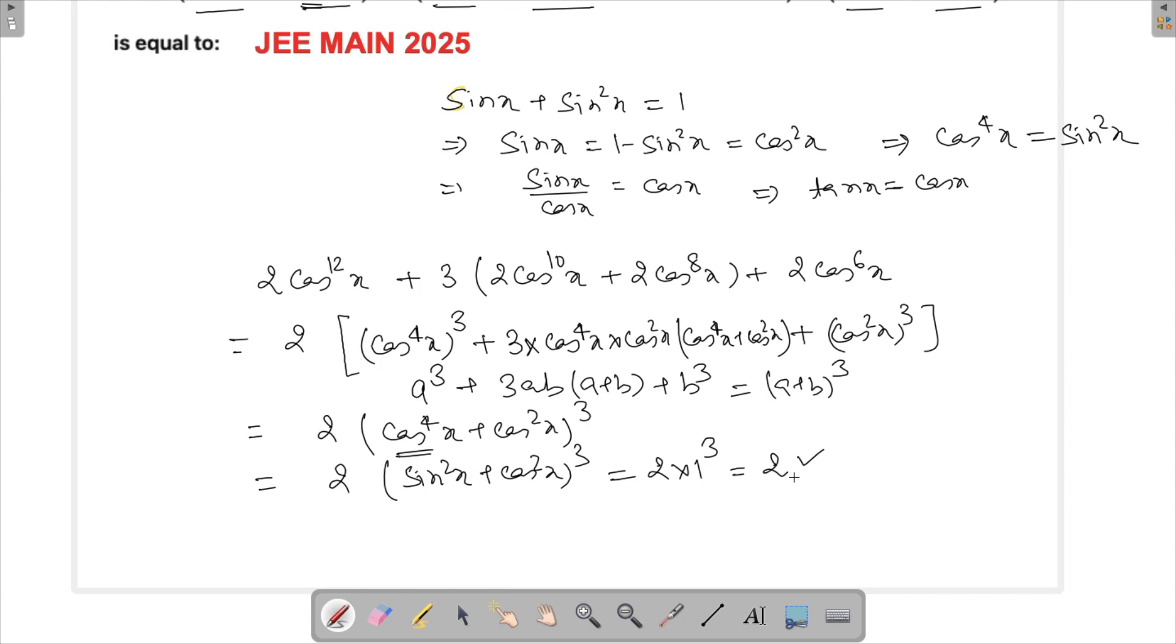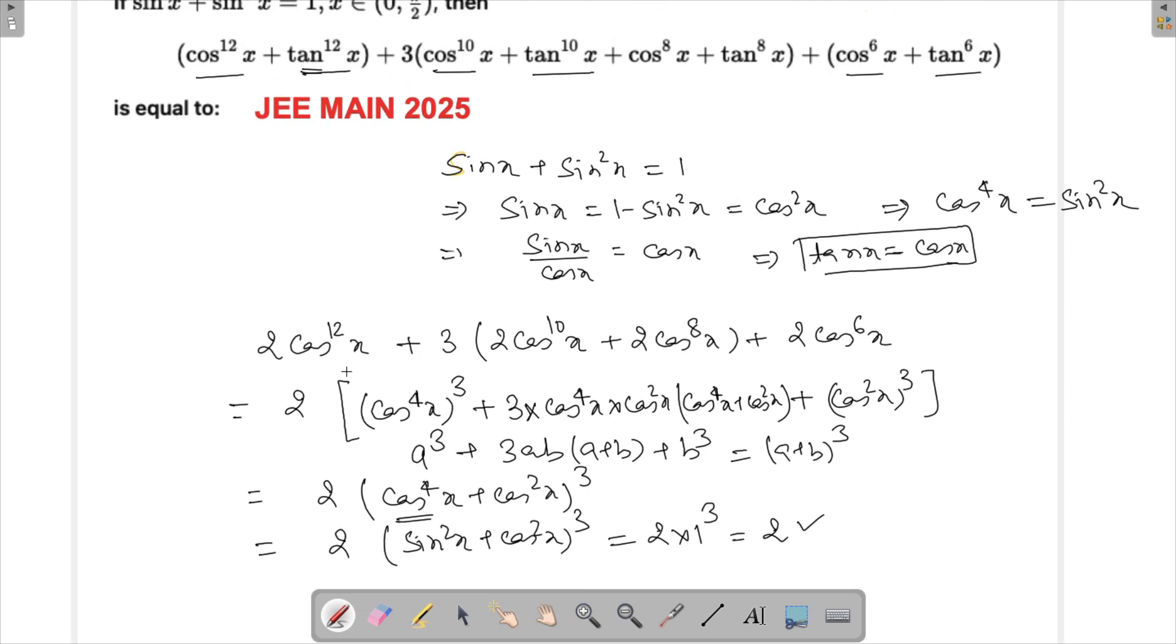Alright, so there were two or three steps here. One is to figure out that it has to be tan x equals to cos x, and another thing is that it is not done that we just leave it as sin x and cos square x, that can be used later on as well. So first we converted every tan to cos.